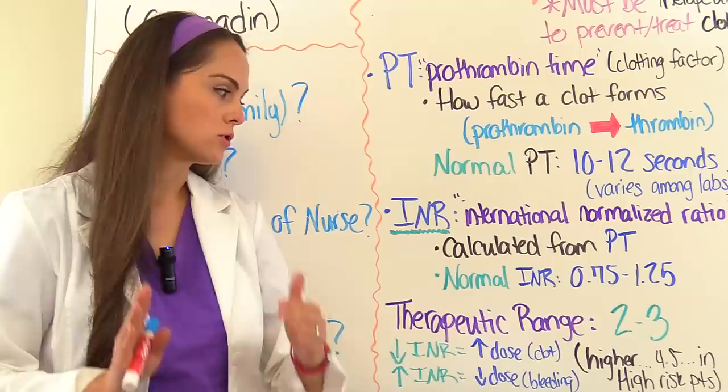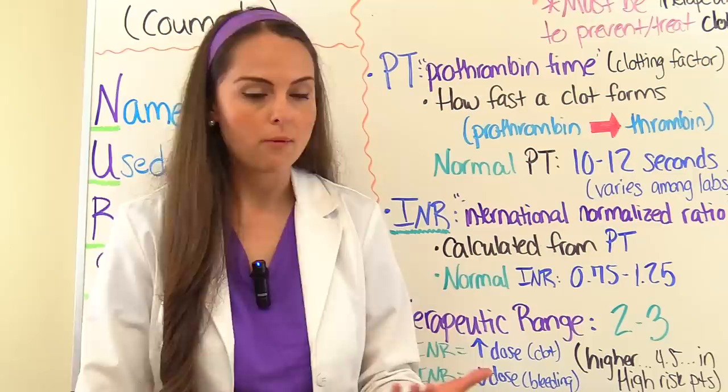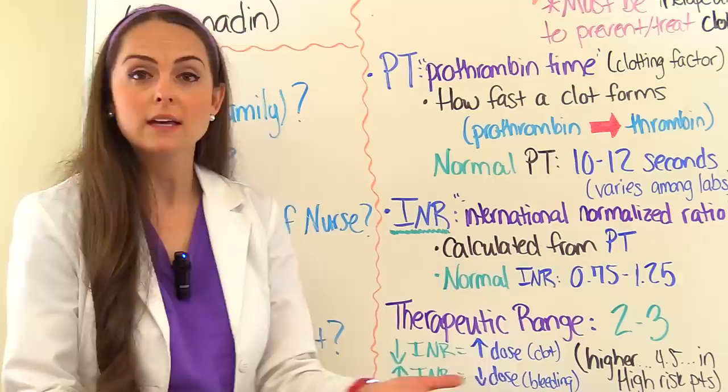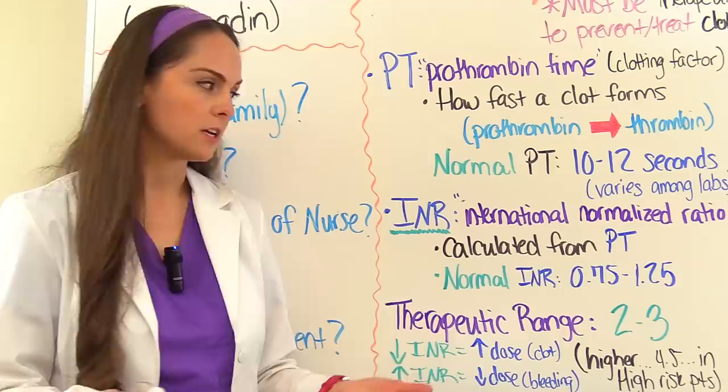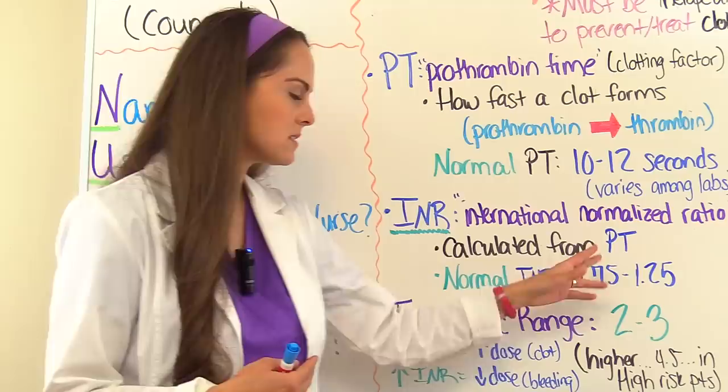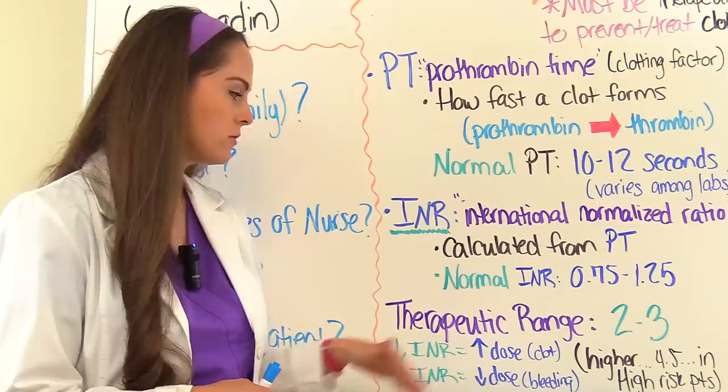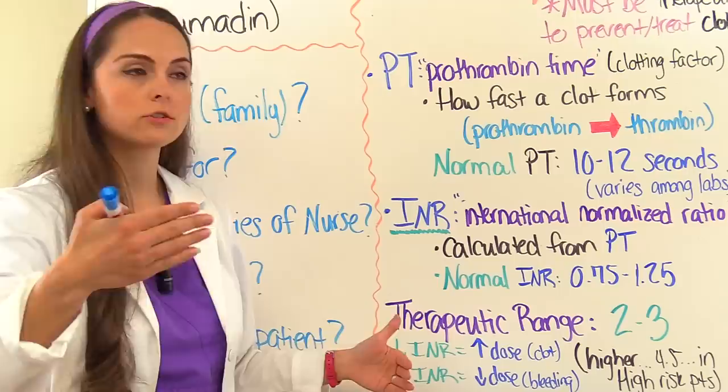Test questions like to give you an INR value and ask what your next nursing action is. For example, if the INR is 6 and a dose of Coumadin is due, you would hold that dose and notify the physician. If the INR is low — less than 2 — the patient is not therapeutic and is at risk for clots, so the dosage would need to be increased. If the INR is high, the patient is at risk for bleeding and should be monitored, and the dose needs to be lowered.